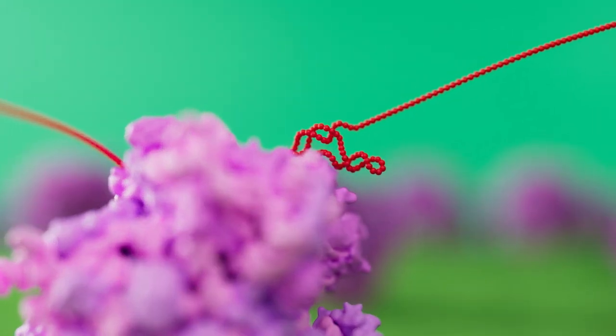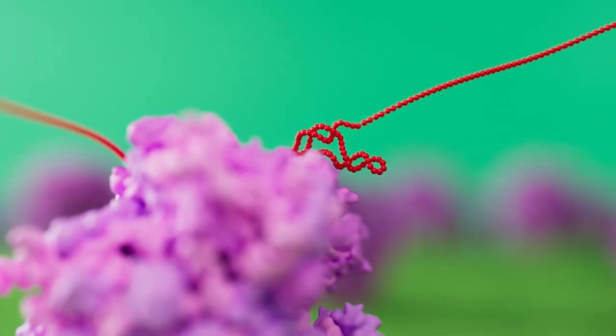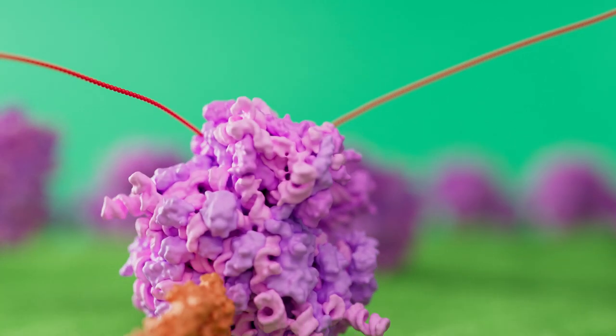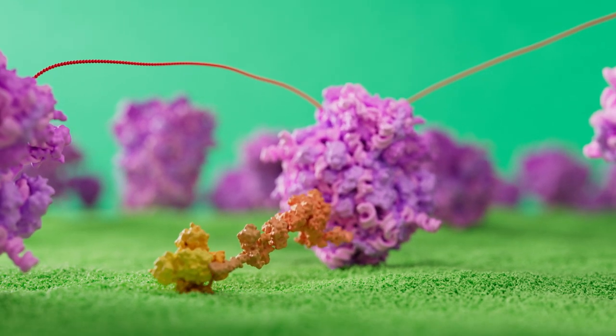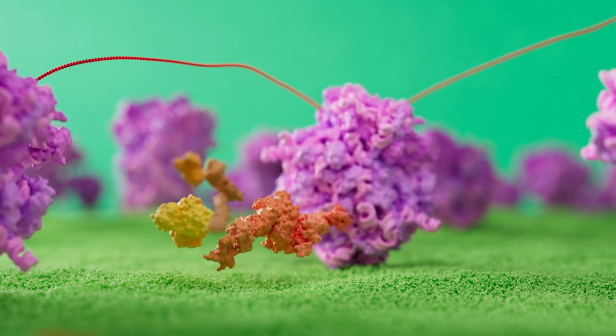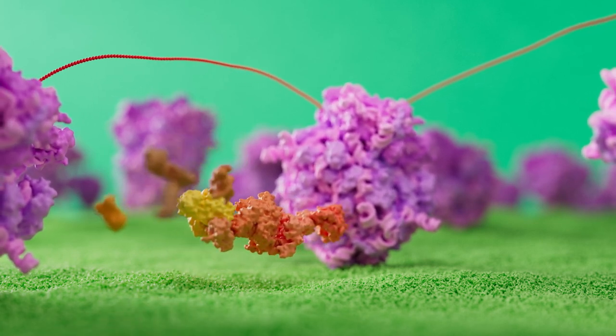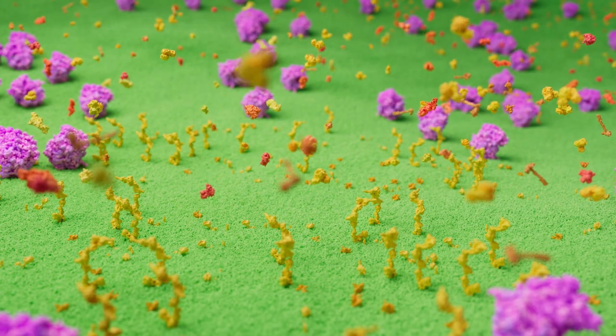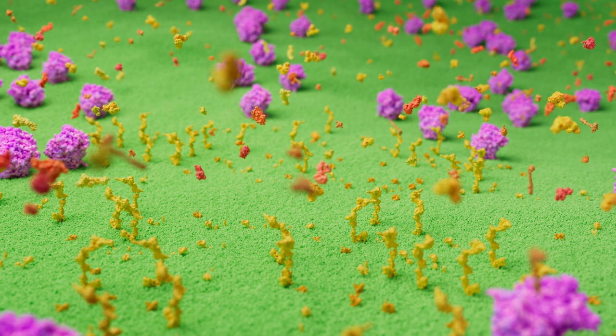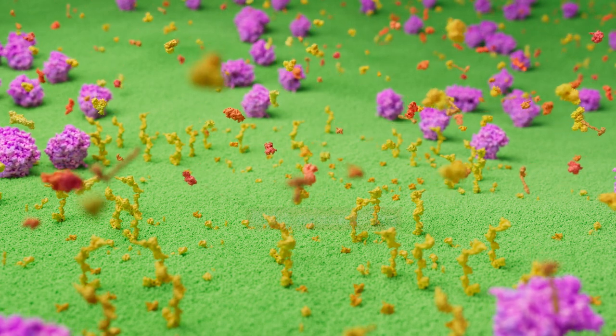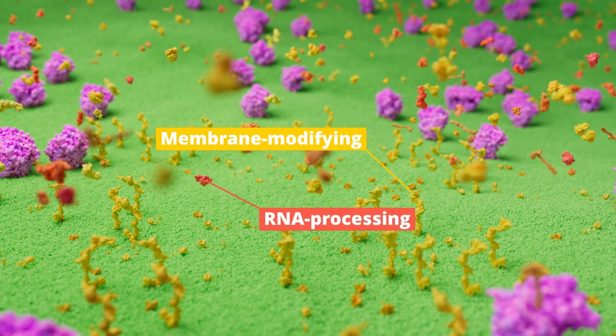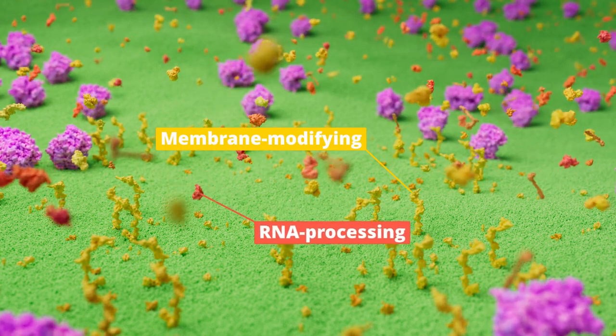The translation can either stop here, or the pseudoknot in the viral RNA can slip, allowing the remaining viral RNA to be read. The second cutting NSP is now able to cut all of the remaining proteins. Because of the pseudoknot, the translation of the viral RNA often stops prematurely. As a result, the host cell produces fewer of the RNA-processing NSPs from beyond the knot than the various membrane-modifying NSPs from before the pseudoknot.